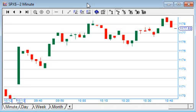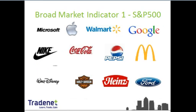The index is useful as it consists of 500 companies listed in the US that give us a good representation of the US economy and therefore its condition at any one point in time. Well-known companies on the index include Microsoft, Apple, Walmart, Google, Nike, Coca-Cola and Pepsi, McDonald's, Walt Disney, Harley-Davidson, Heinz, and Ford. These companies are selected by committee to represent the various industries in the US economy.